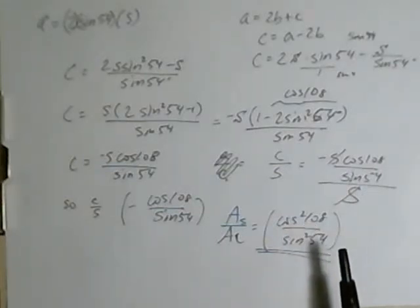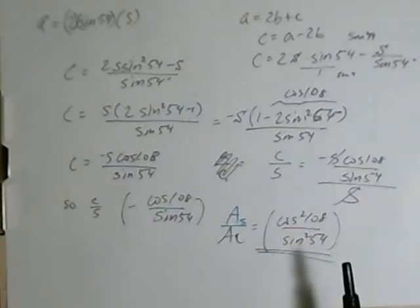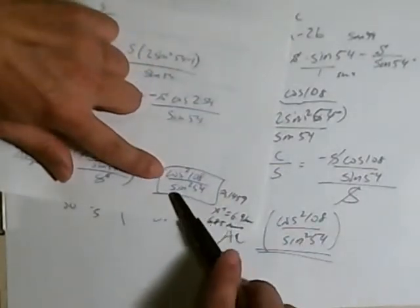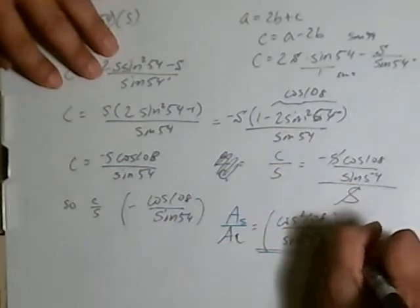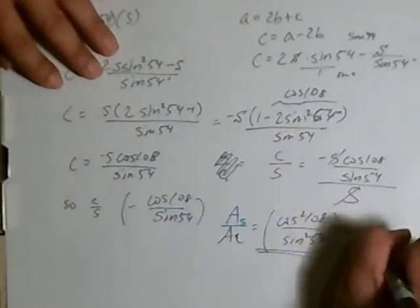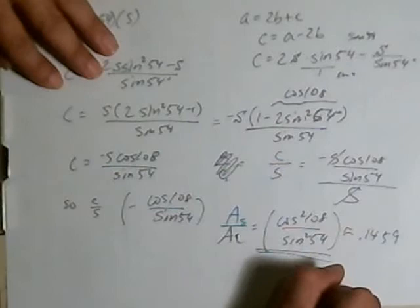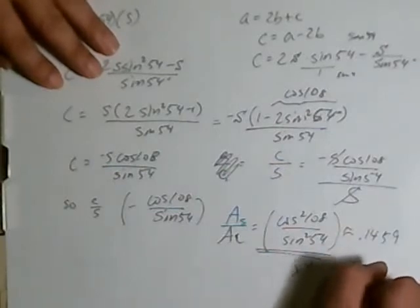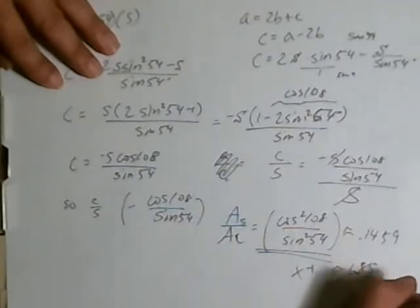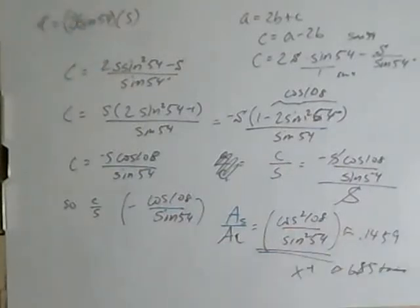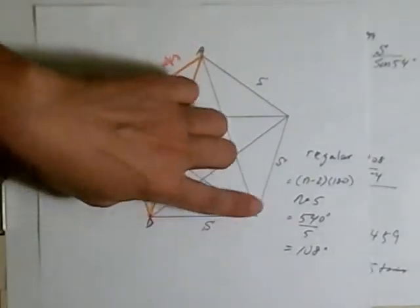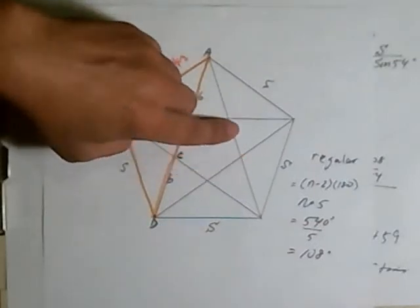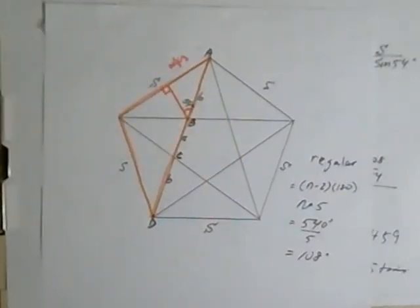I actually did some preliminary work on this. I used my calculator. Cosine squared of 108 over sine squared of 54 turns out to be approximately 0.1459. Or if I did the inverse of that, it was approximately 6.85 times bigger. This area turns out to be 6.58 times this area right there. Hope that answers your question. Thanks and take care.